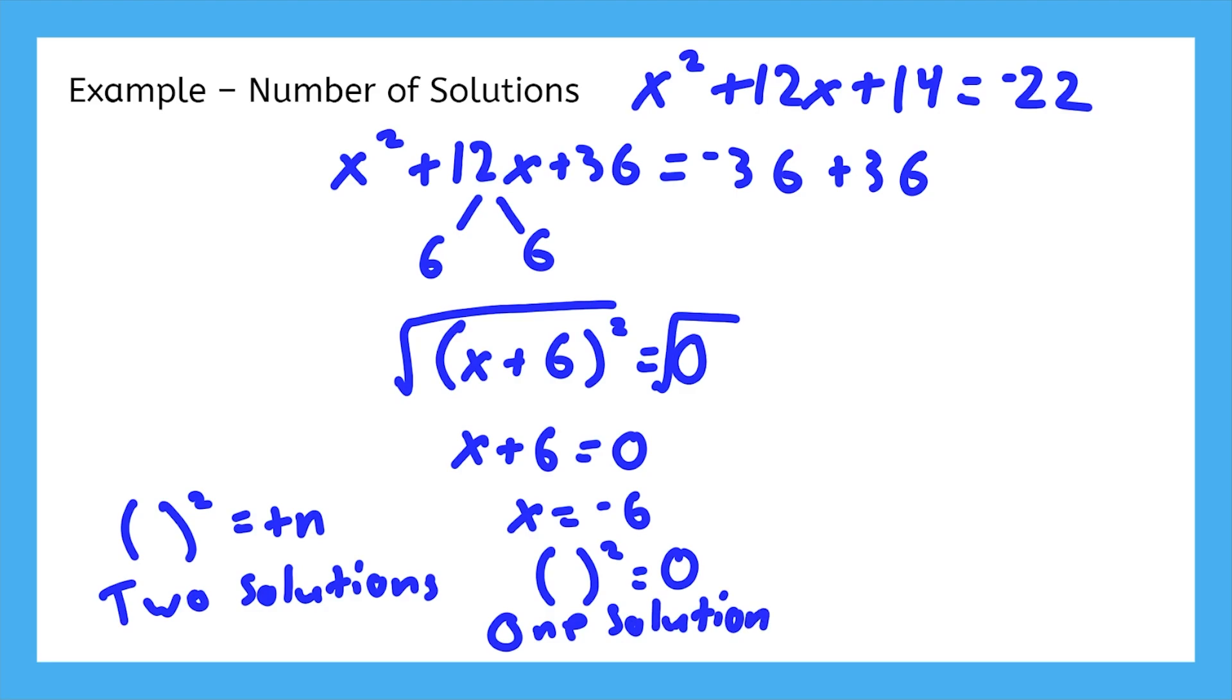Completing the square is actually kind of similar to the discriminant. The final possibility, completing the square with a negative number on the right side means there will be no solutions, because you can't take the square root of a negative.